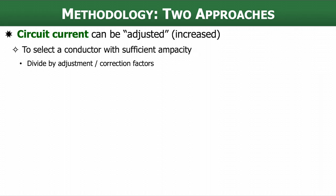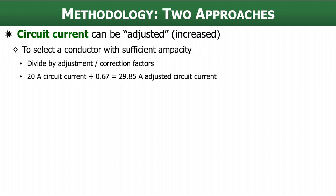For example — and we'll talk about these throughout the presentation — we divide by the adjustment or correction factors we apply for temperature or numbers of conductors in conduit. If we have a circuit current of 20 amps and correction factors that are less than one — decimal values — we divide: 20 amps divided by 0.67 gives an adjusted circuit current of 29.85 amps. We need a conductor rated for 29.85 amps. Essentially, because of the conditions the wire will operate in, it needs to be able to carry more than the actual circuit current, and the correction factors tell us how much more.